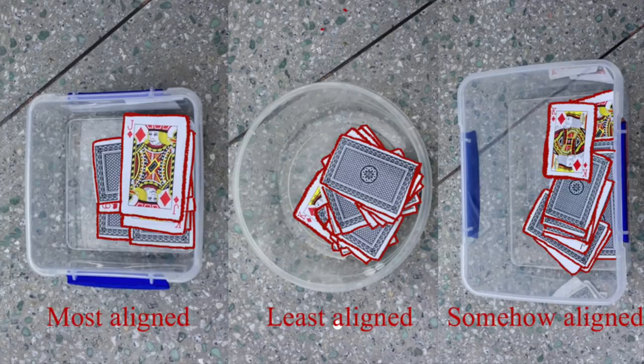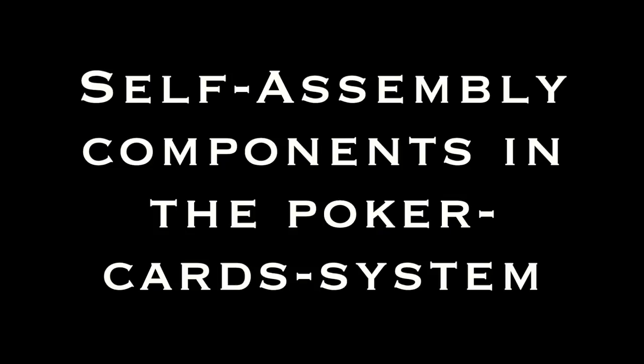So, you're wondering why this happened? Here, I'll explain the self-assembly process in the poker cards experiment. In a self-assembly system, there are four crucial components.